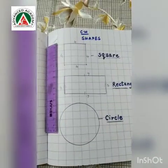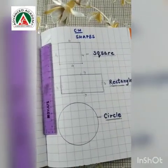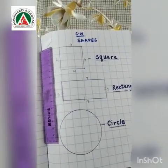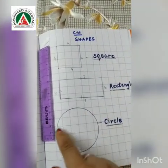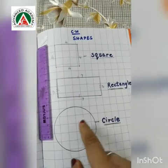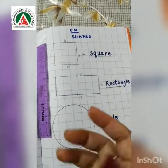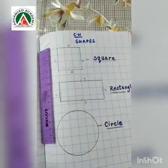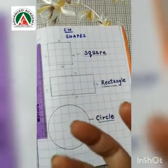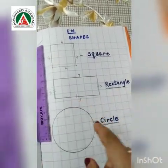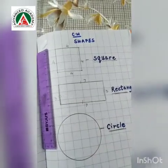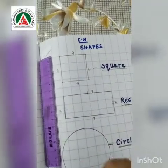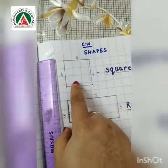Children, when you draw the shapes, always use a scale. And if you are drawing something circular, use something like a bangle or any circular shape object so that you can draw a proper circle. So first we will come to the square.